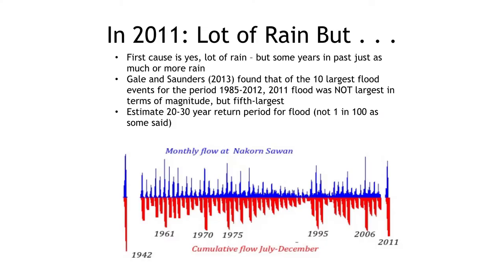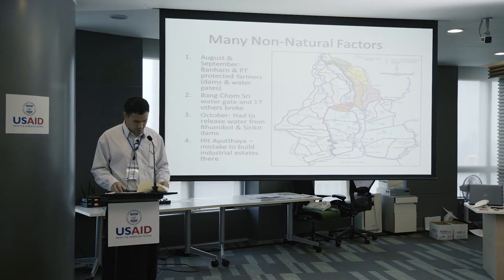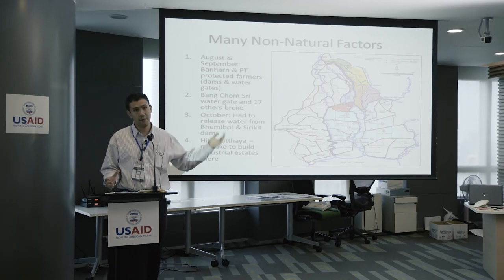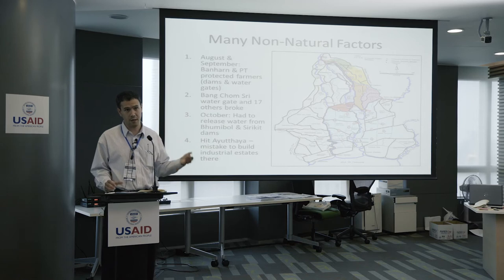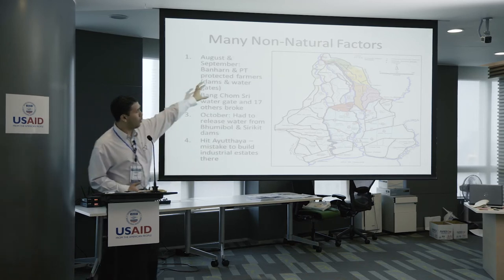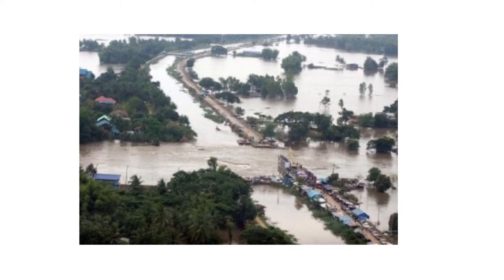Moving now to 2011: the first cause is yes, there was a lot of rain — but there was just as much rain in years past. So as I argued, there are many non-natural factors, human and social actions. Besides the environmental changes discussed, it was also how water was managed upstream. As a result, 17 water gates broke, showing how large the breach was.